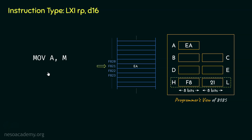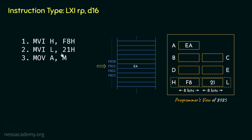We can use the instructions we have learned so far. First, we can use the instruction MVI H,F8H, which specifies that the higher order byte F8 is to be moved immediately into register H. Thereafter, we can use another instruction MVI L,21H, which specifies that the lower order byte of the address will be moved immediately into register L. By the time these two instructions have been executed, the data F821 will be loaded into the HL register pair, and only then can we execute MOV A,M.